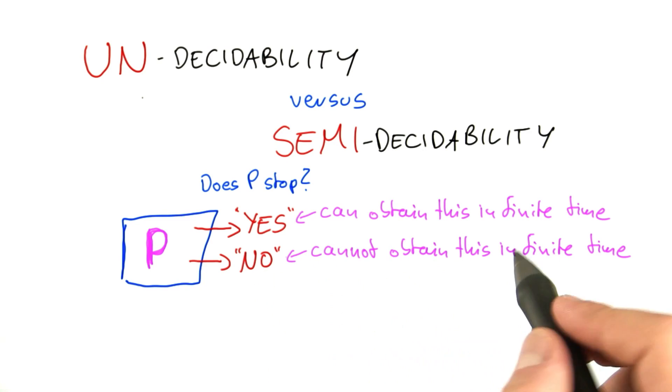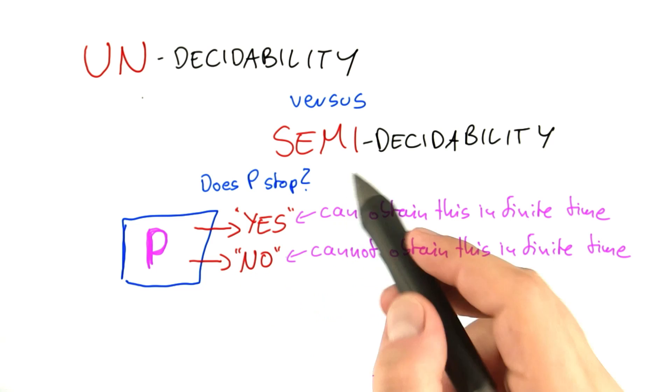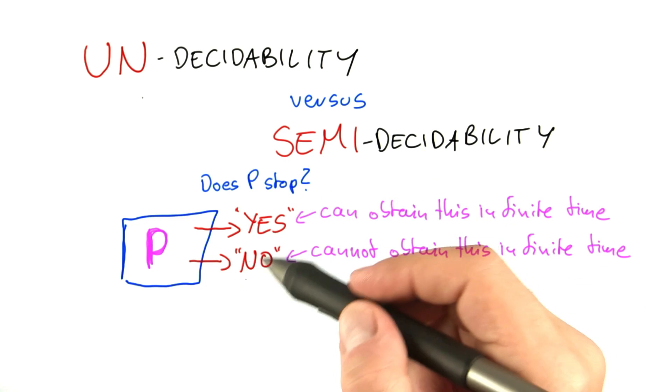The answer 'no' is something that we cannot obtain in finite time. And that is why the halting problem is called semi-decidable, because we can kind of decide half of the answers.